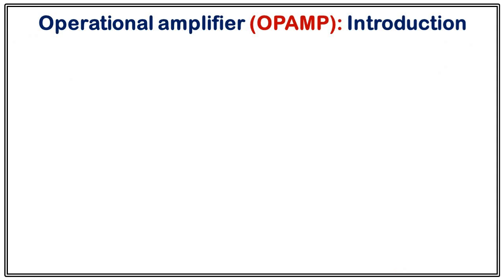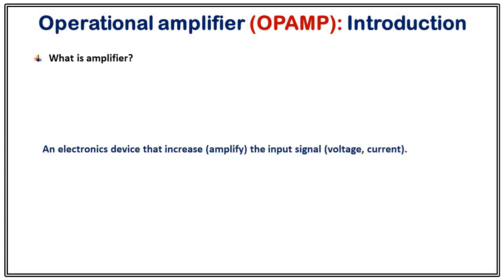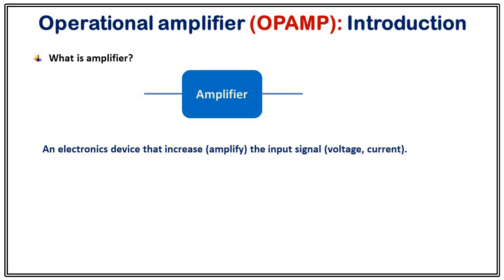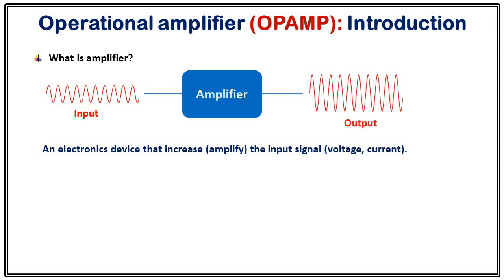Before understanding what is an operational amplifier, we must know what is an amplifier. An amplifier is an electronic device that increases, that means amplifies, the input signal which may be voltage or current. This is just a simple black box diagram of an amplifier. Here you can apply an input signal at the input terminal; due to the amplification you will receive an amplified signal at the output terminal.